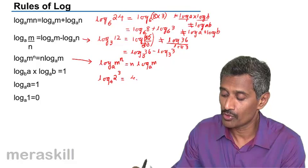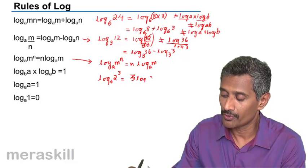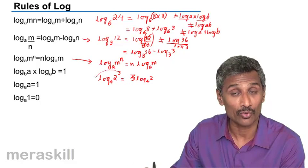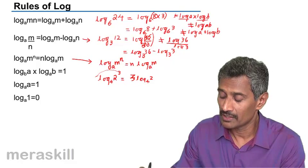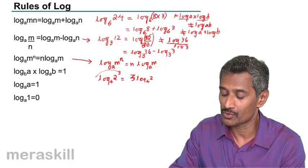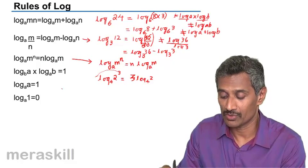Suppose I have log of 2 cubed to the base 4. It is 3 log 2 to the base 4. That is, I have taken the 3 as a coefficient of this expression. It's log of m raised to n to the base a is n log m to the base a.